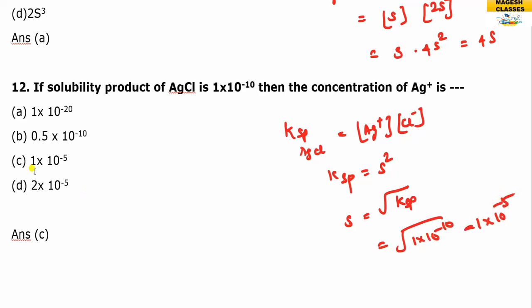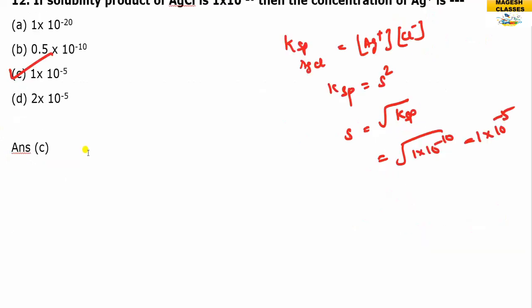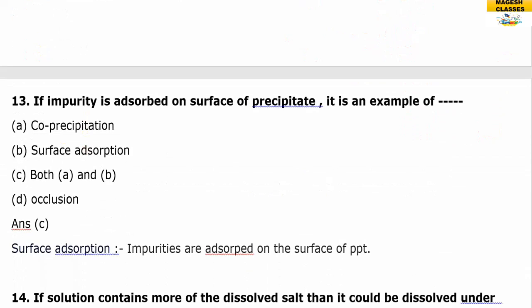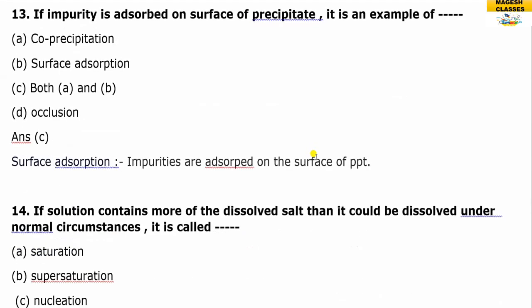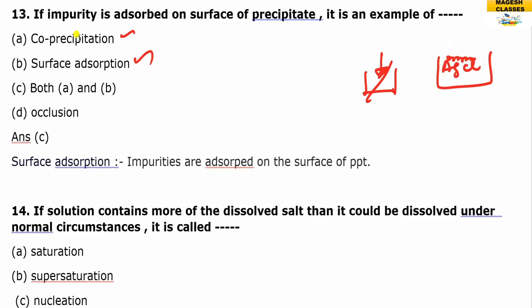If an impurity is adsorbed on the surface of the precipitate, it is an example of co-precipitation by surface adsorption. For example, when silver chloride is precipitated, some impurities are present and they get adsorbed on its surface. So the answer is C — surface adsorption, a type of co-precipitation.